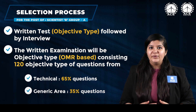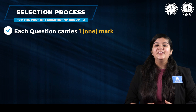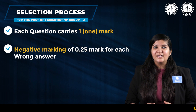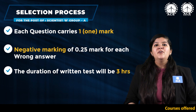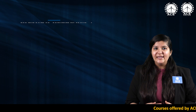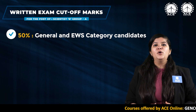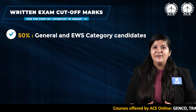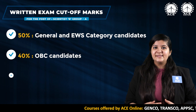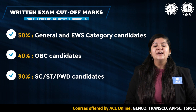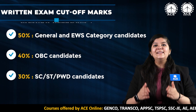Each question carries one mark. There will be one-fourth negative marking for each wrong answer. The duration of the test will be three hours. Qualifying marks for the written examination: General and EWS candidates — 50%; OBC candidates — 40%; SC, ST, and PwBD candidates — 30%.